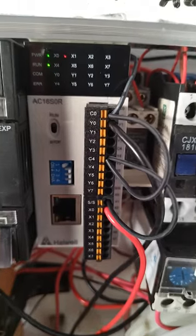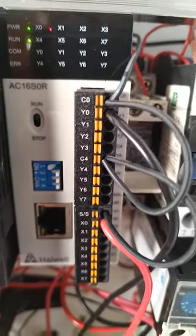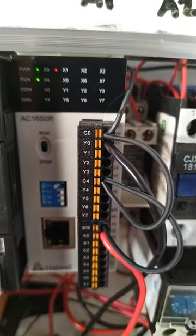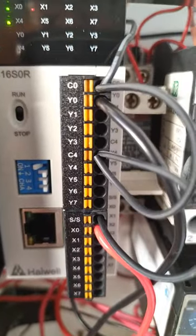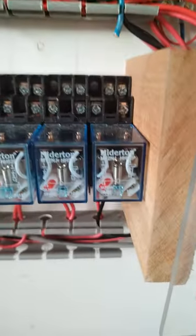Now, how are you going to do the connection here? As you can see, we have the CO and C4, we are giving negative, then the Y0, we are giving it to the relay. I have a relay here.